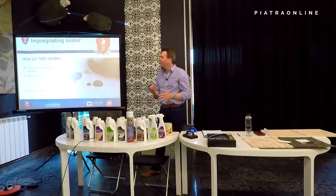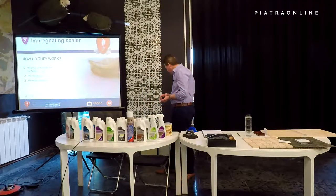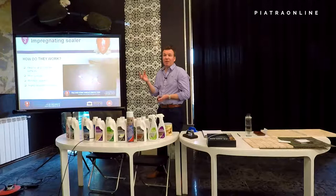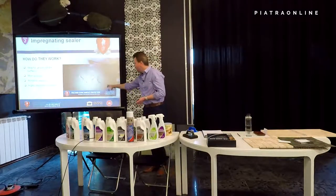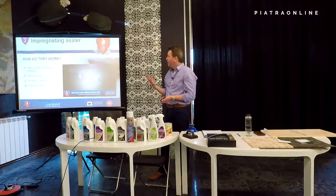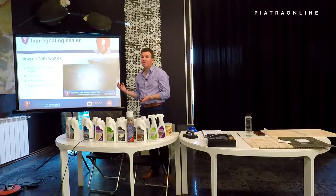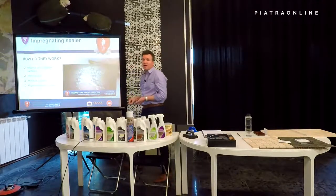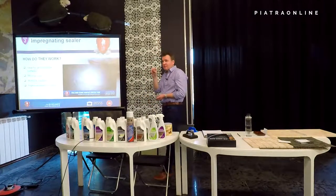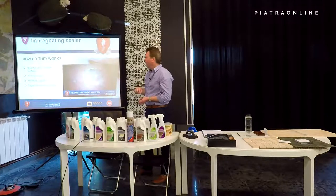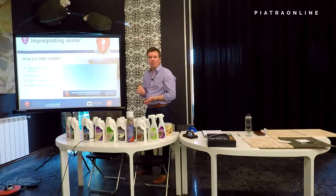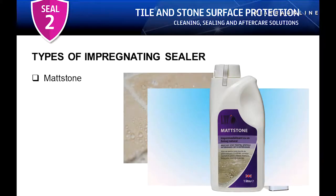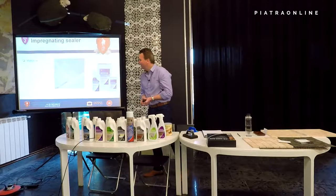With impregnating sealers — ideal for all porous tile surfaces — all natural stones have natural capillaries that need to be filled. The impregnating sealer absorbs beyond the surface into the capillaries; the solvent, either water or spirit-based carrier, then evaporates, leaving tiny microspheres in the surface of the stone. Those microspheres block or plug the pore within the material, stopping anything spilled on the surface from absorbing in.